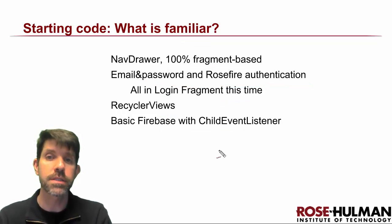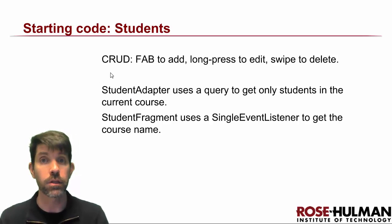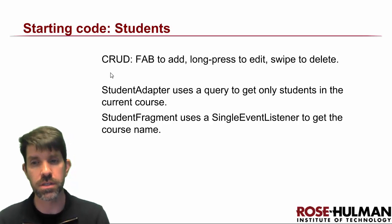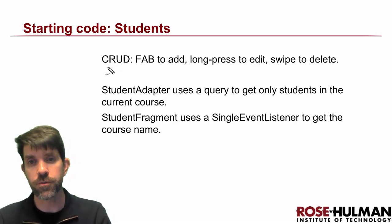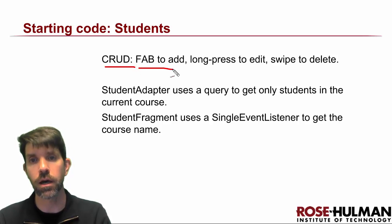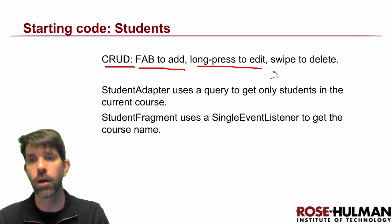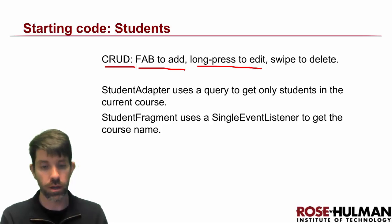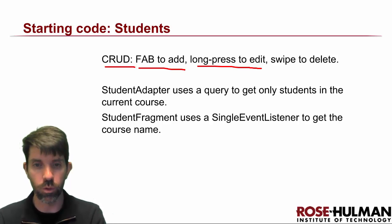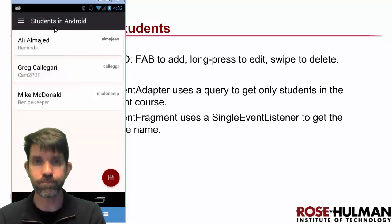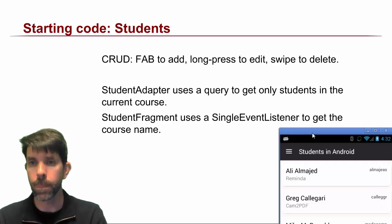Let's key into some more interesting things and take it one class at a time. I'll start with things that are maybe a bit simpler but still very important, then work into more complex things. First, for students — we have a full credit interface, so the floating action button is going to add, long press is going to delete students, and then there's swipe to delete. Let me bring this up to look at while we're talking through it.